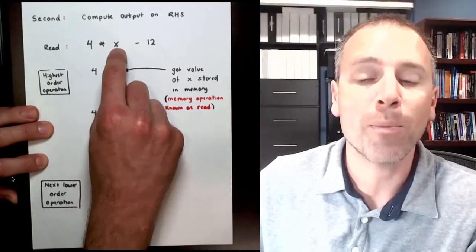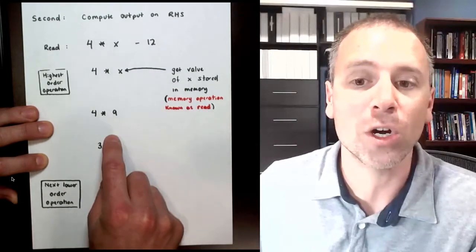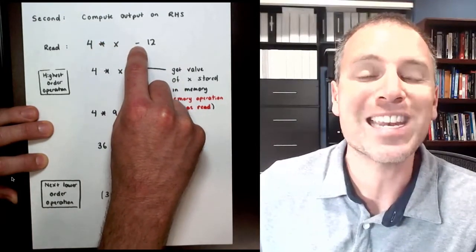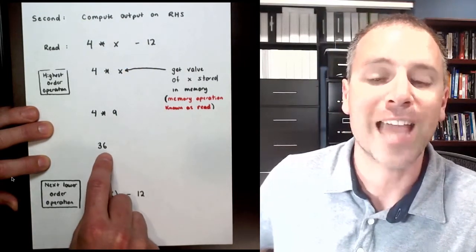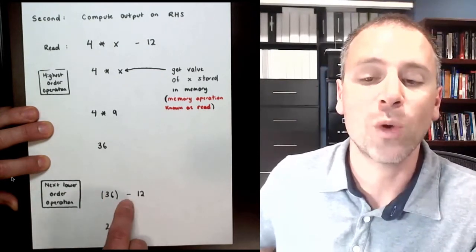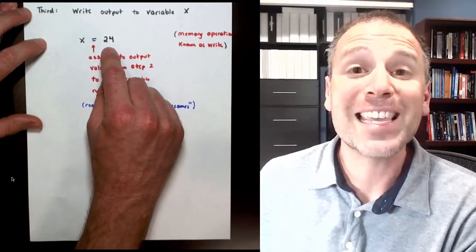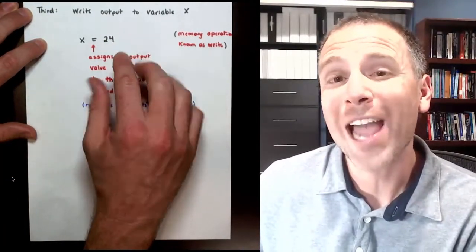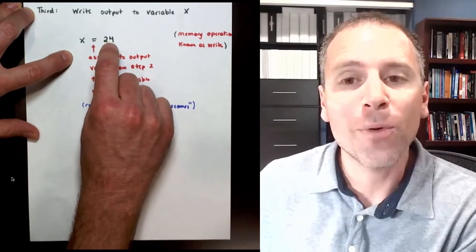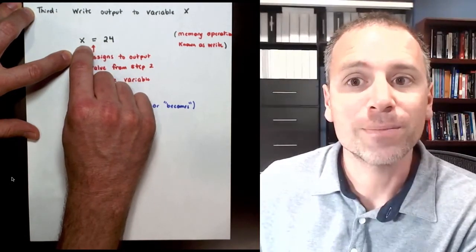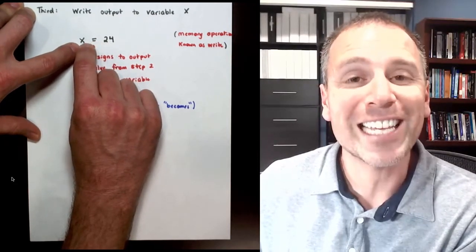MATLAB has now gotten the output of the computable expression on the right-hand side: 24. It's going to write that into the variable named x using the assignment operator. The symbolic name doesn't change. Instead of x being associated with 9, from now on x is associated with 24.